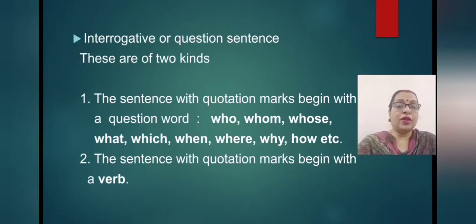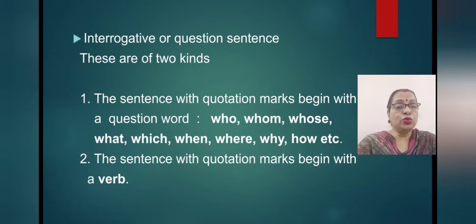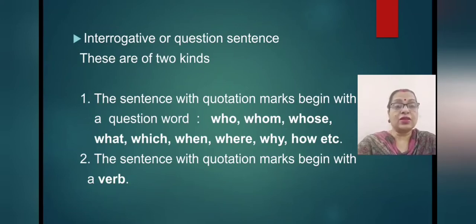Now that you have understood the important points, let's start with the types of sentences. First, we will look at interrogative or question sentences. These are of two kinds. The first type: the sentence with quotation marks begins with a question word like who, whom, whose, what, which, when, where, why, how, etc.